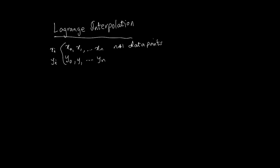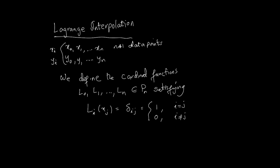Lagrange interpolation starts by defining what are called the cardinal functions. We define cardinal functions l0, l1, through ln — the l comes from Lagrange. These belong to Pn, which means they are up to nth order polynomials. They are functions that belong to the polynomial n-space.